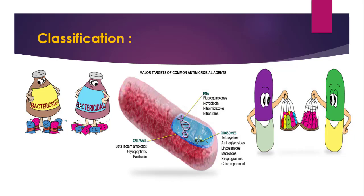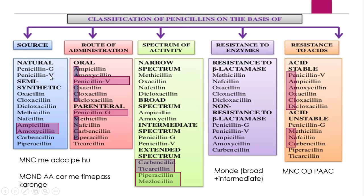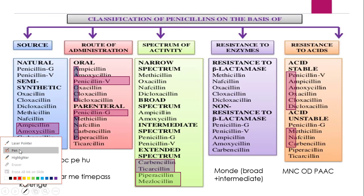As you can see here in the image, there are various classes based on which the penicillins are classified. It is based on spectrum of activity — broad spectrum and narrow spectrum. Based on the type of action, their nature is bactericidal. Based on the mechanism of action and the type of activity shown by them, and based on the spectrum shown by them. These are some of the major classes. Now coming towards the actual classification of penicillins.